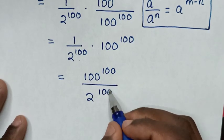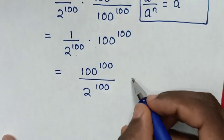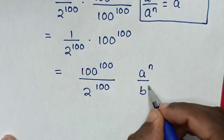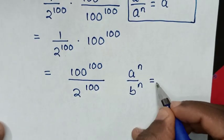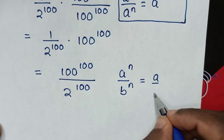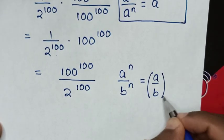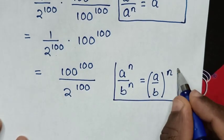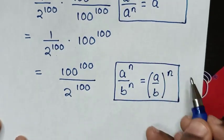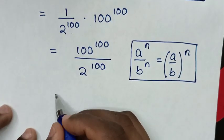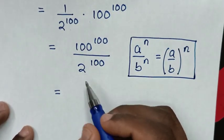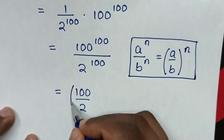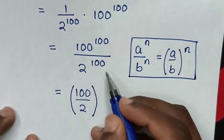Then, here we have division of exponents with the same power, so we'll apply the rule: a power of n over b power of n is equal to (a over b) bracket, common power of n. Then it will be equal to (100 over 2) bracket, common power of 100.